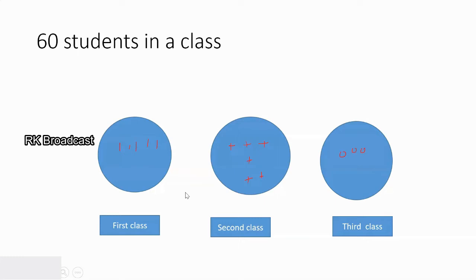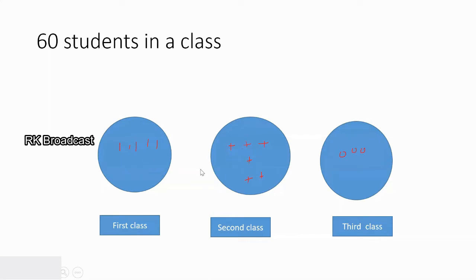Let us see an example. In a class there are 60 students, and the students are divided into three different groups based on their marks. In the first group are all the first class students, in the second group are all the second class students, and in the third group are all the third class students. This indicates that within a cluster all the objects are similar, and dissimilar with the other groups.